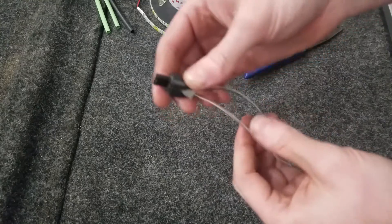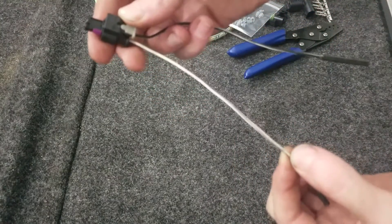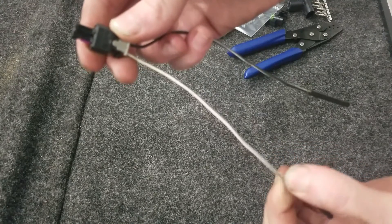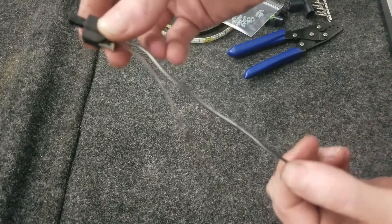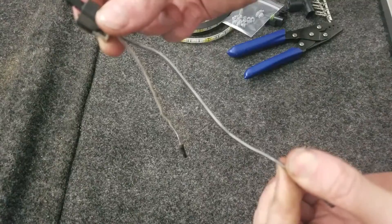Alright, so those of you that are doing this actually to your own Colorado, the white with a purple trace, this is your power. The camera really doesn't pick up on the purple trace, but trust me, it's on there. The other wire that you're ground, that is a black with a white trace.